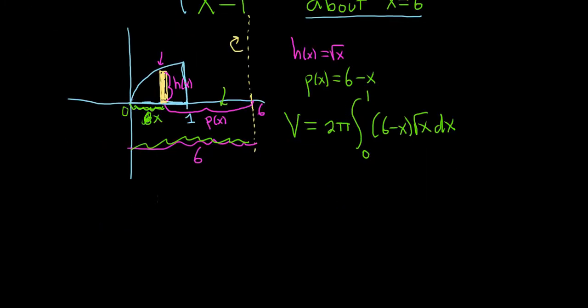To integrate this, we might first start off by rewriting the square root function in a more convenient way. So let's do that by writing it as x to the 1 half power. So that would be, I think, a really good step. So x to the 1 half dx. And we did this because we really want to distribute here. So this is 2 pi times the definite integral from 0 to 1. This will be 6x to the 1 half minus, and then x to the 1 times x to the 1 half is x to the 3 halves. So minus x to the 3 halves, and then we have our dx.